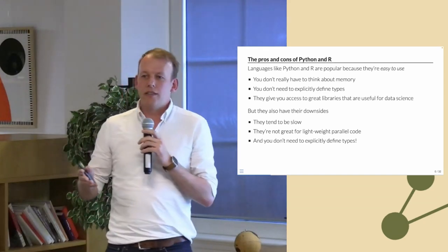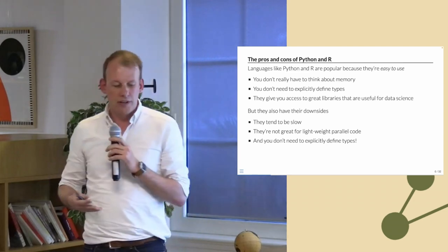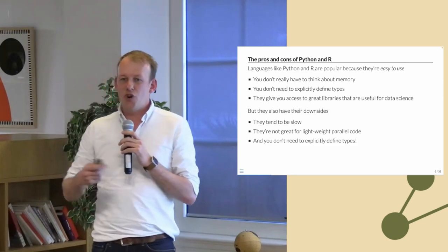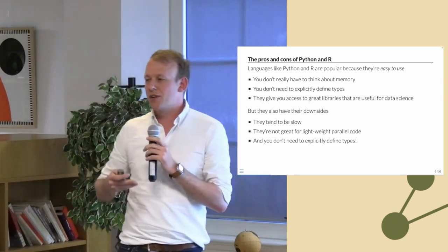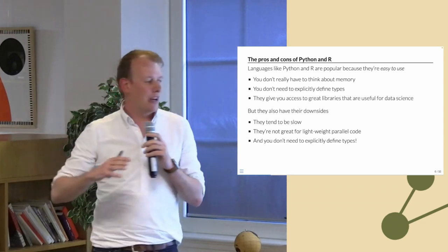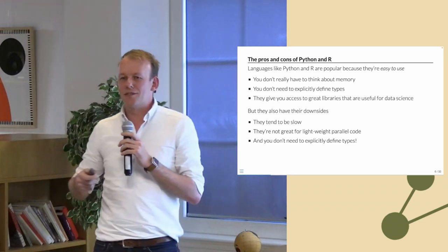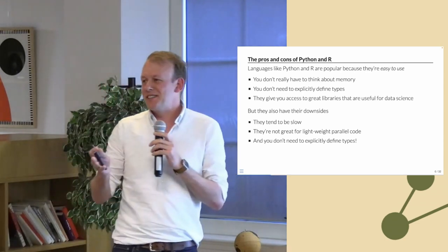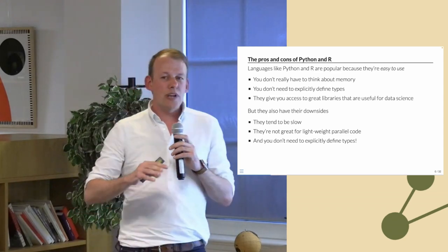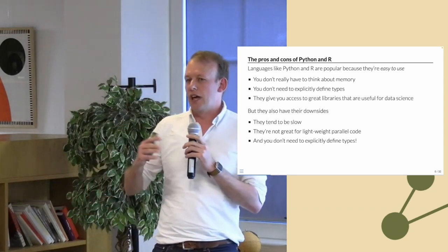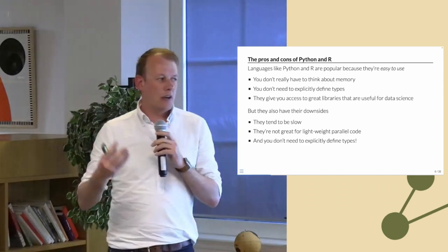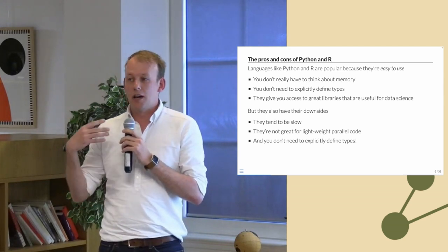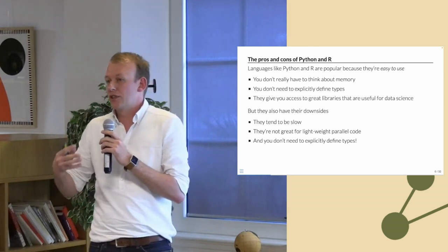Why are languages like R and Python popular? The reason is they're easy to use. You don't really have to think about memory — these languages have garbage collectors, and the runtime manages memory for you. You don't have to explicitly define types, which makes the language easier to use. And you also have access to a great range of libraries. The ecosystem around Python in particular is great for data science.